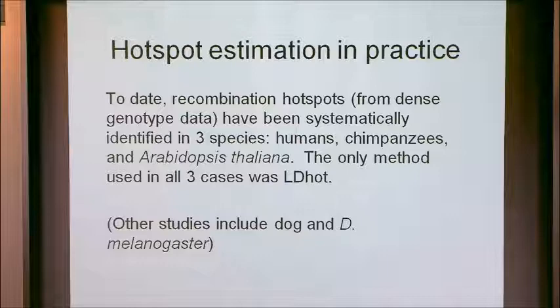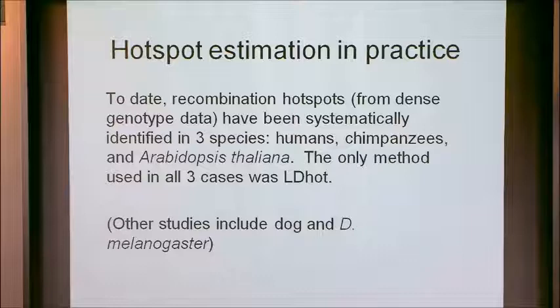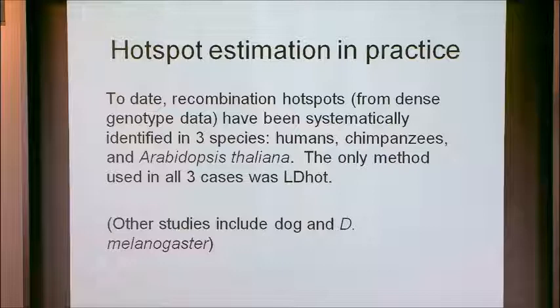I'm only aware of three studies I would view as systematic that looked for hotspots across the whole genome. Those studies included humans, chimpanzees, and Arabidopsis. All three used LDHOT. There's some study of hotspots across the dog genome, but it's based on pretty low-density SNP data. There's one in Drosophila that you and colleagues did — my understanding is you just looked at specific regions for hotspots and did not actually survey the whole genome.